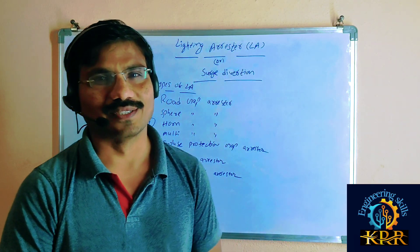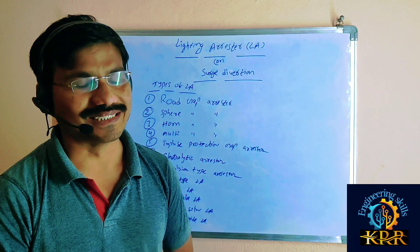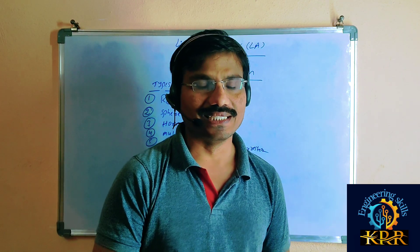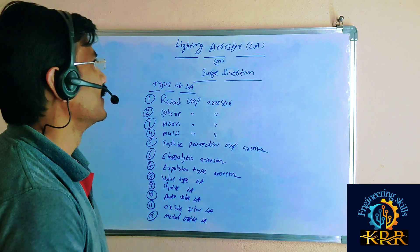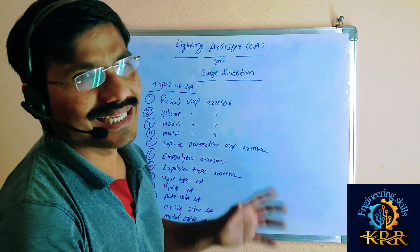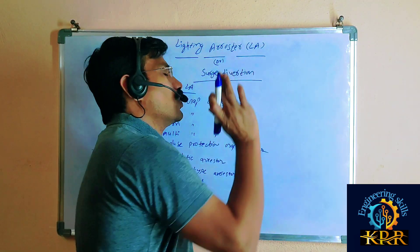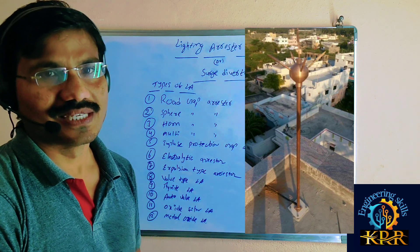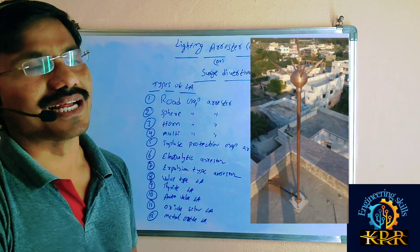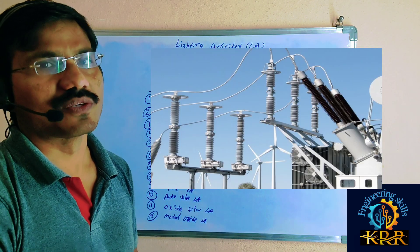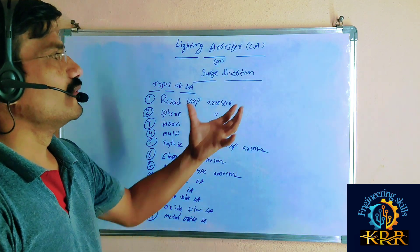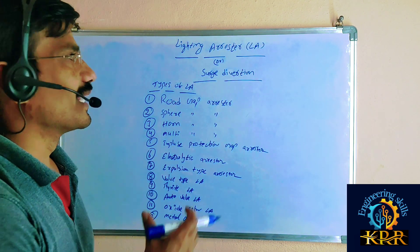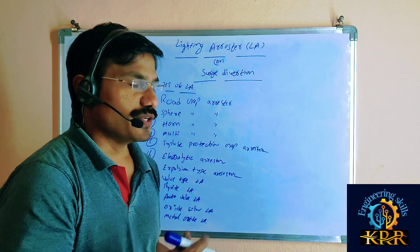Hello friends, today we are discussing one more concept: lightning arrestors, also called surge diverters. Lightning arrestors are mainly used in two locations: one is building areas, and the second one is transformer areas or substation areas.